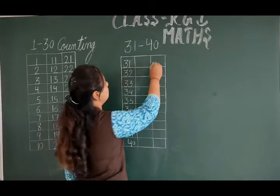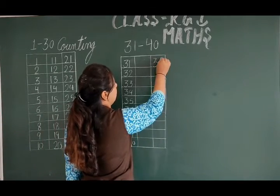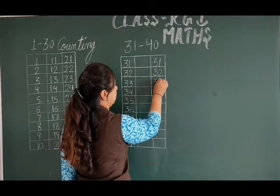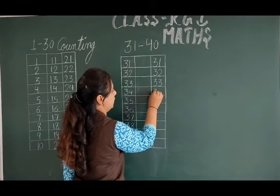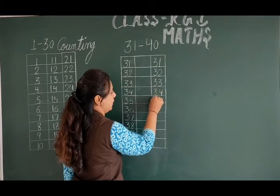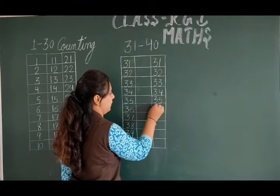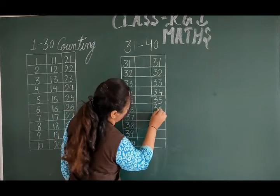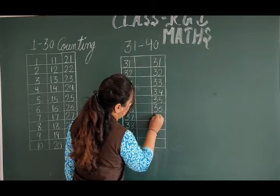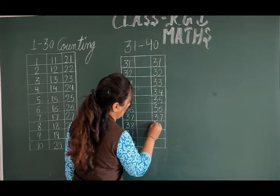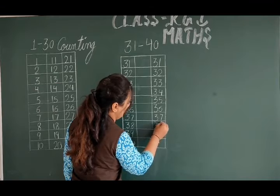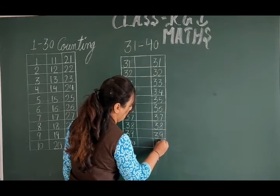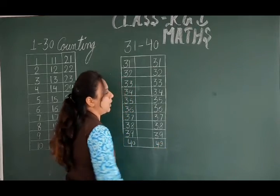Once again. 3, 1, 31. 3, 2, 32. 3, 3, 33. 3, 4, 34. 3, 5, 35. 3, 6, 36. 3, 7, 37. 3, 8, 38. 3, 9, 39. 4, 0, 40.